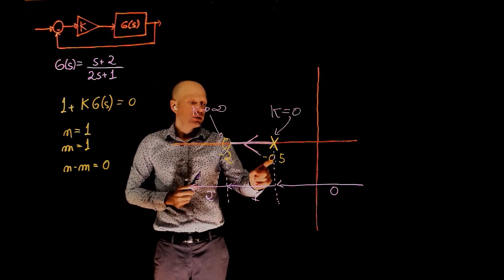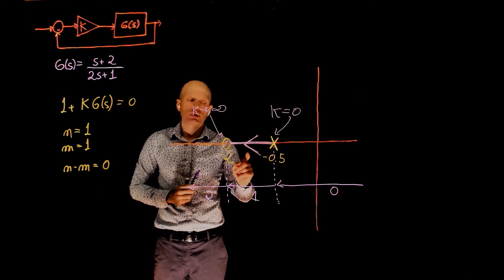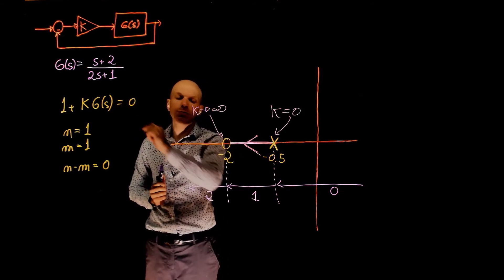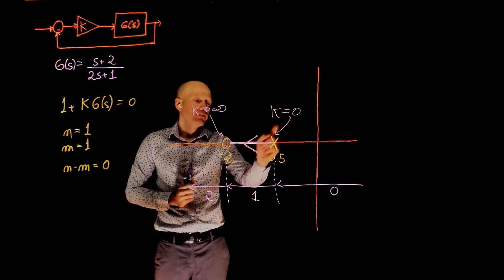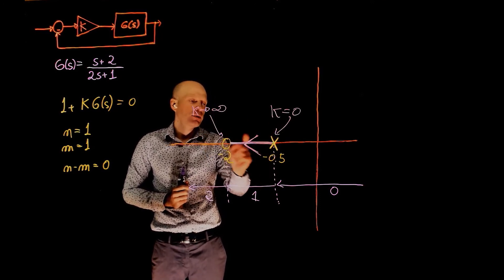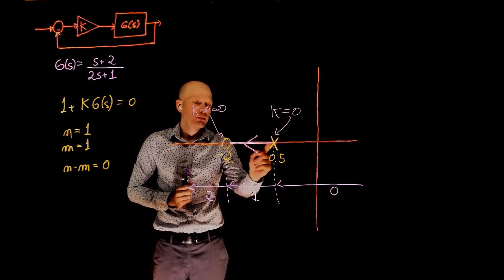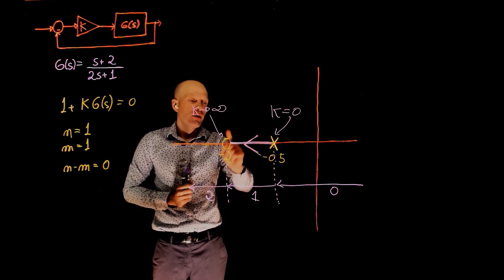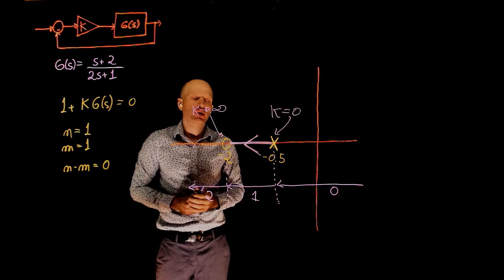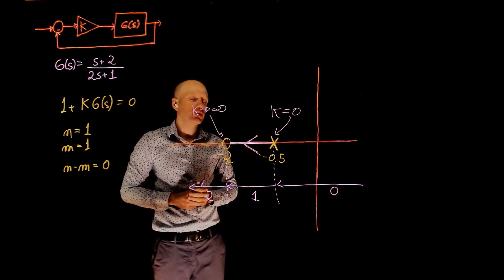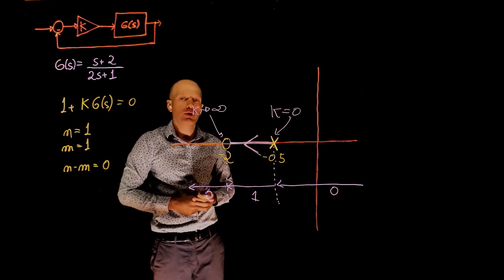Negative 0.5 and negative 2 are the pole and zero of the open loop transfer function. But this connection here, from k equals 0 to infinity, where the pole goes from this point to the zero, this behavior here represents the behavior of the closed loop transfer function. And this is now the root locus for this unit feedback control system.